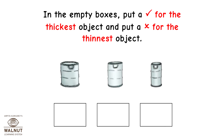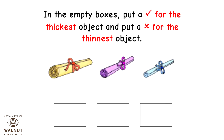In the empty boxes, put a tick mark for the thickest object and put a cross mark for the thinnest object.